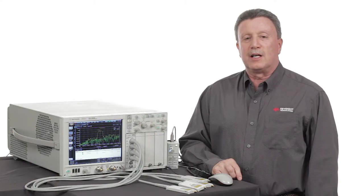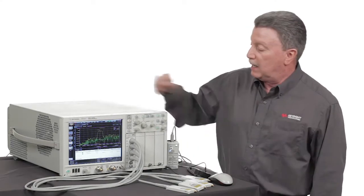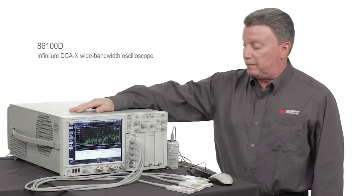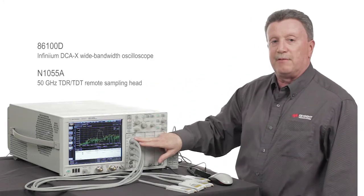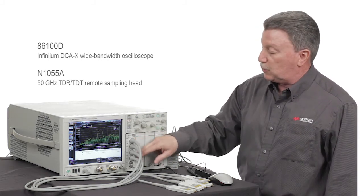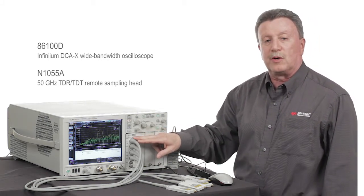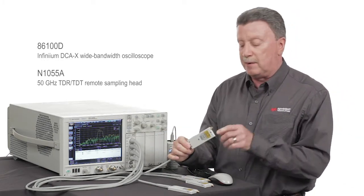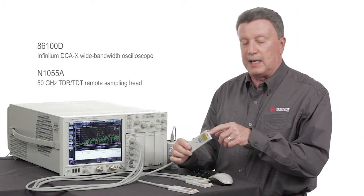Let's take a close look at the instrumentation we're going to be using to make measurements today. This is the Keysight 86100D DCA-X mainframe. And this is the N1055A 50 GHz TDR-TDT module. This one happens to have four channels, but you can also get them with two channels. And each channel has a remote head like this one with a 1.85 millimeter connector at the end.